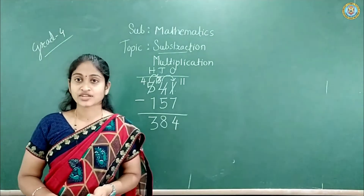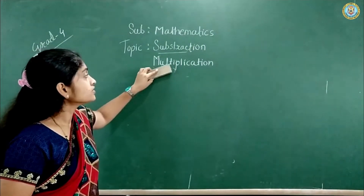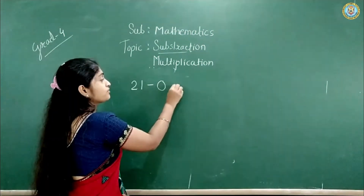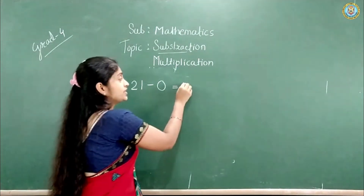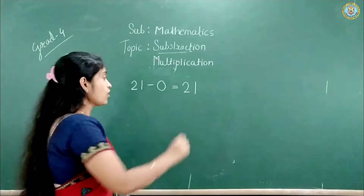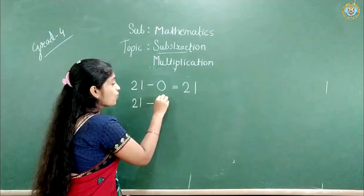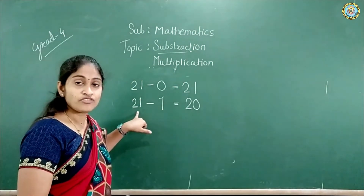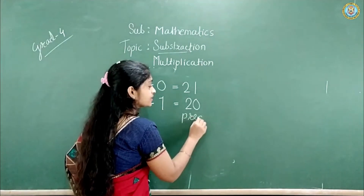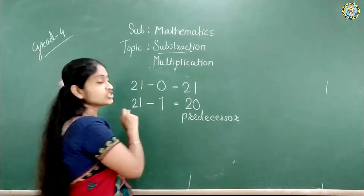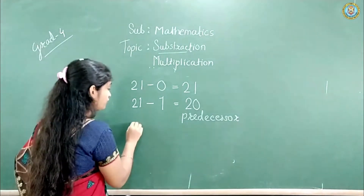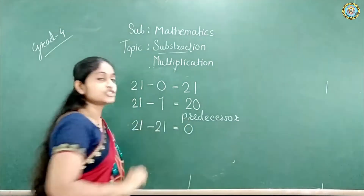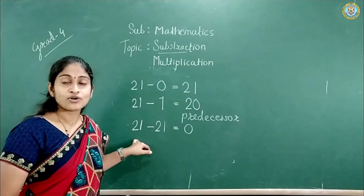Like this we have to do subtraction. Now we will move on to some properties of subtraction. If any number — see I have the number 21 — if we subtract 0 from 21, we get 21. This is one of the properties of subtraction. If we subtract 1 from any number, we get 20, which is the predecessor of 21. And if we subtract the given value from itself, we get 0. These 3 are the properties of subtraction.